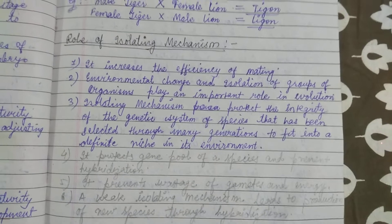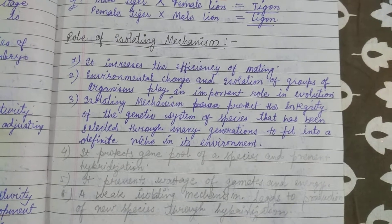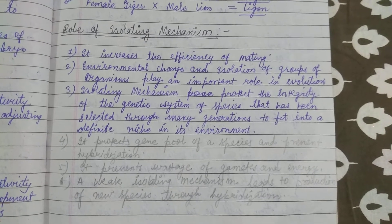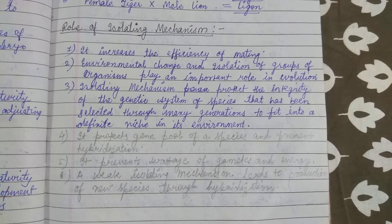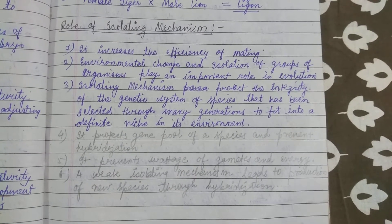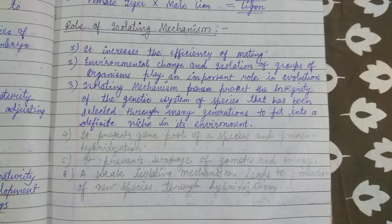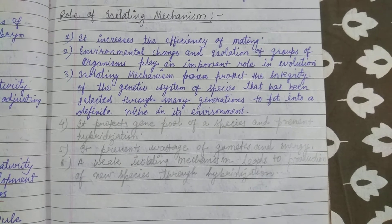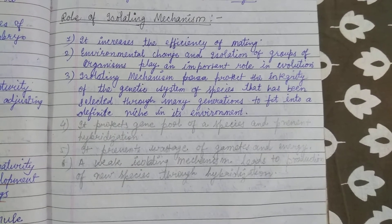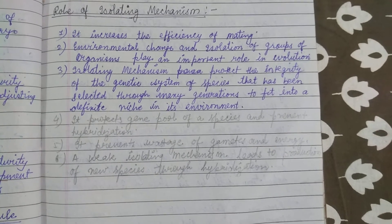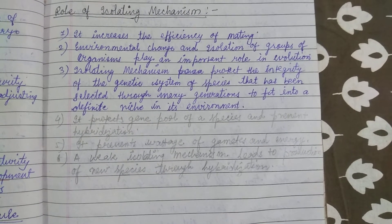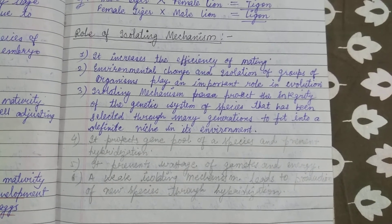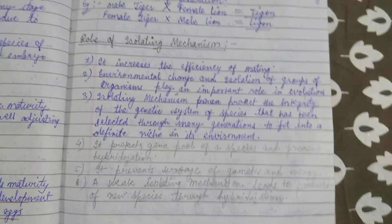The role of isolating mechanisms: they increase the efficiency of mating, and environmental change and isolation of a group plays an important role in evolution. Isolating mechanisms protect the integrity of the genetic system of species selected through many generations to fit into different niches. They protect the gene pool, prevent hybridization, prevent wastage of gametes and energy. Weak isolating mechanisms lead to the production of new species through hybridization. That's the whole overview of isolation and its subtypes. Thanks for watching.